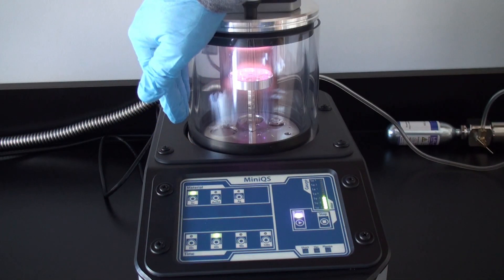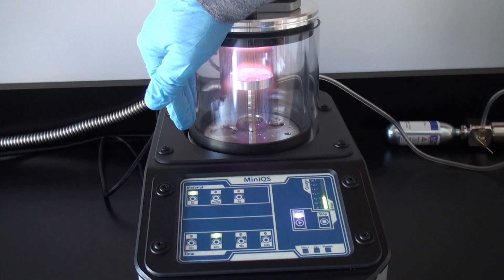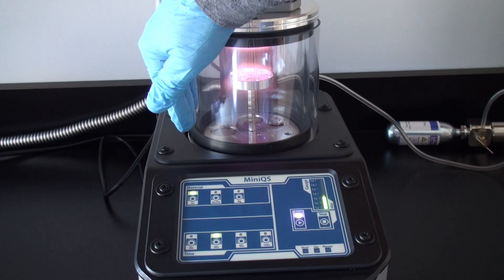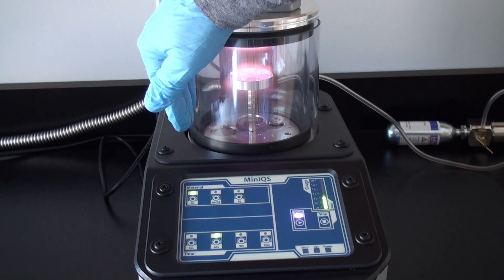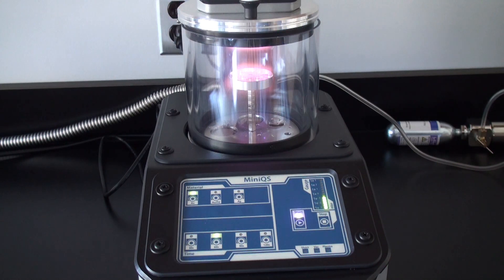it will start the sputtering process and ignite the plasma, as you can see here in the chamber. We have our typical gold plasma being formed, your samples are being coated for the specified amount of time, and then the system will automatically stop. This is a turn it on and forget system. It will complete the entire cycle all on its own without any intervention.